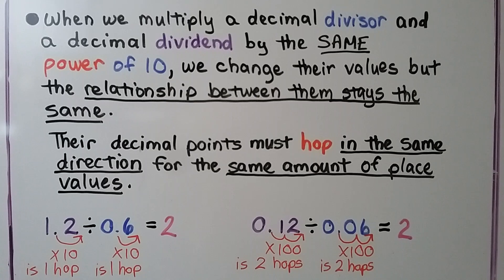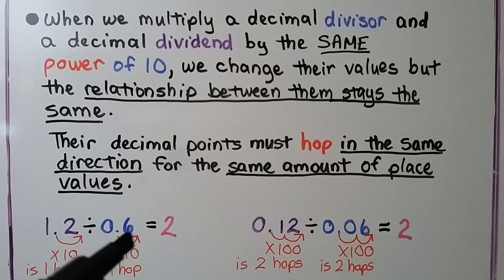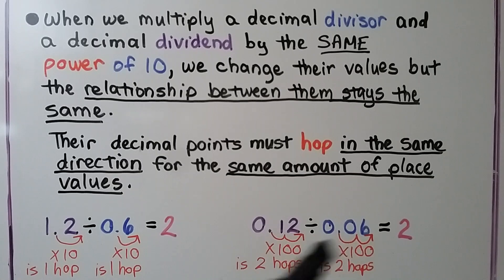When we multiply a decimal divisor and a decimal dividend by the same power of 10, we change their values, but the relationship between them stays the same. Their decimal points must hop in the same direction for the same number of place values. For example, 1 and 2 tenths divided by 6 tenths: we multiply both by 10 — that's 1 hop each. If we have 12 hundredths divided by 6 hundredths, we multiply both by 100 — that's 2 hops each.